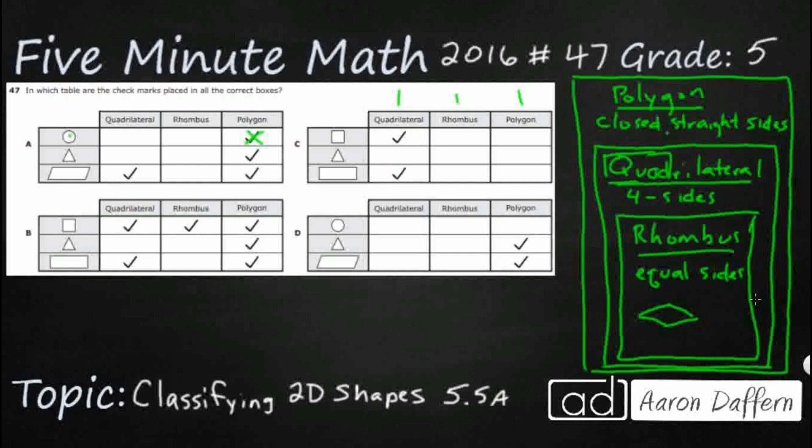Next we have a parallelogram. The polygon is correct. It is a four-sided shape and it is not a rhombus. So actually, everything is good on A except for that circle. It's not a polygon. Let's check B.